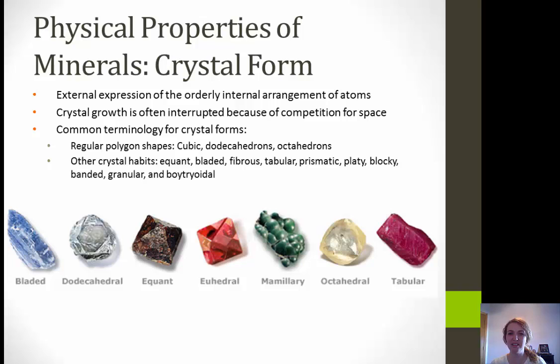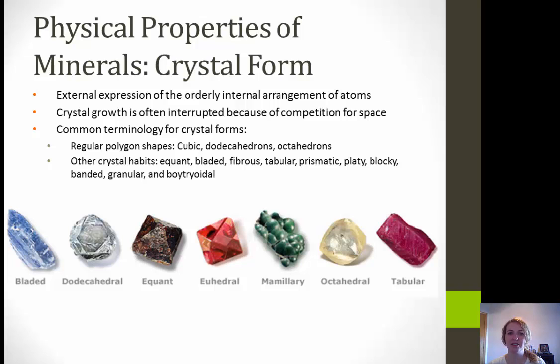Now we're going to get into the different physical properties of minerals — this is where we really start to talk about how you would identify them. The first physical property we'll cover is crystal form: the external expression of the orderly internal arrangement of the atoms. What that's saying is we're going to look at how the minerals look from the outside to determine how everything would have combined inside — the overall shape or habit of the mineral. Crystal growth is often interrupted because of competition for space, so we might get unusual shapes.